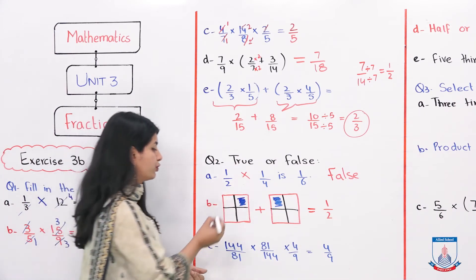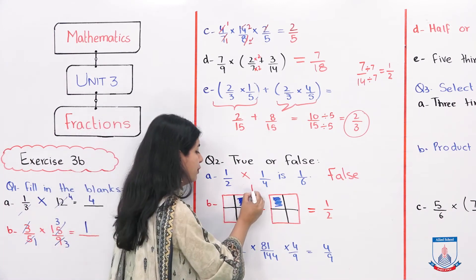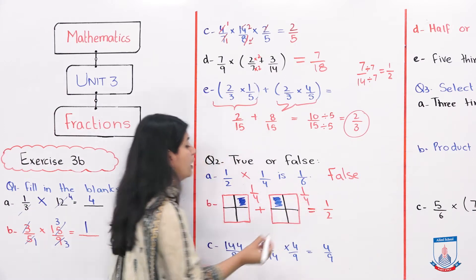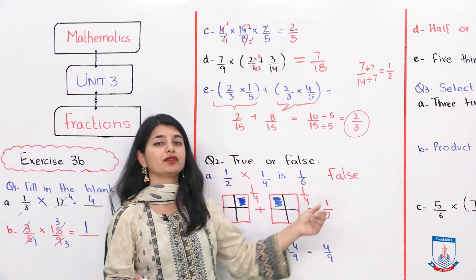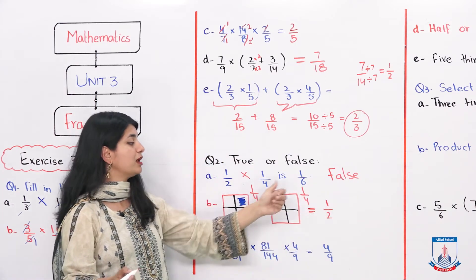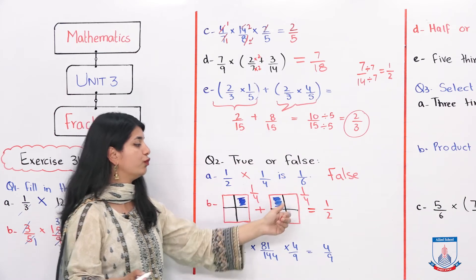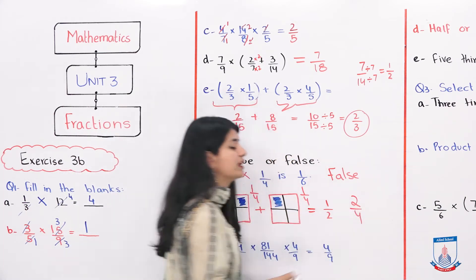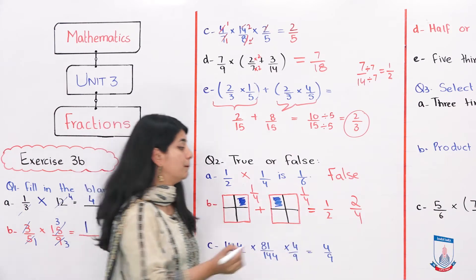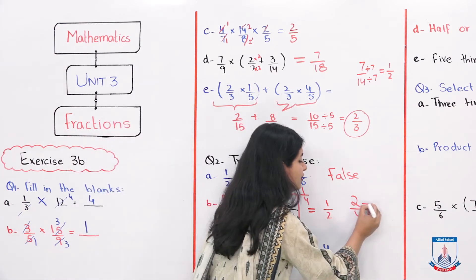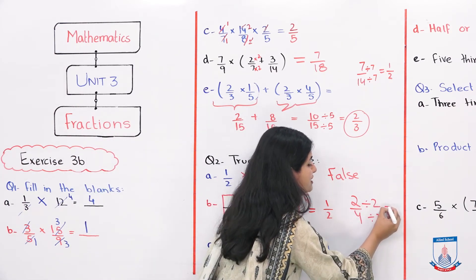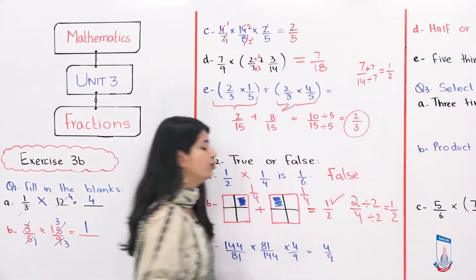For part B, we have 1 by 4 plus 1 by 4. 1 plus 1 is 2 over 4. Simplifying by dividing by 2 gives us 1 by 2. The actual answer is 1 by 2, so this statement is true.